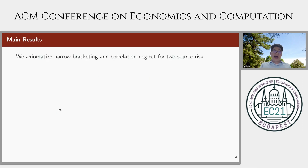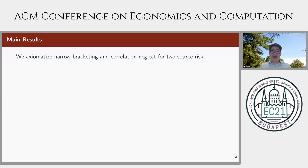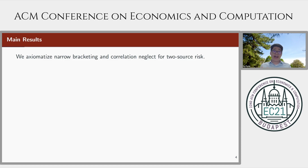Despite the prevalence of these two heuristics, they have received very little attention in the choice-theoretic literature. One possible reason is that they are typically interpreted as irrational biases and supposed to deviate drastically from the standard benchmark. After all, they violate dominance as in the experiment. To our best knowledge, we are the first to provide an axiomatization for narrow bracketing and correlation neglect as simplifying heuristics for multisource risk.